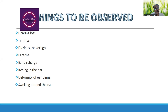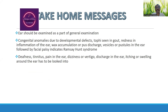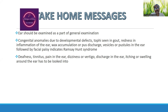Swelling around the ear may indicate inflammation. The take-home messages: the ear, as a part of general examination, has to be examined properly. In some occasions, we can make the diagnosis of some systemic diseases. Congenital anomalies are observed due to developmental defects. Tophi are seen in cases of gout. Redness of the ear indicates inflammation. Wax accumulation or pus discharge may indicate disturbances in the external ear. Vesicles or pustules in the ear followed by facial palsy makes the diagnosis of Ramsay-Hunt syndrome.